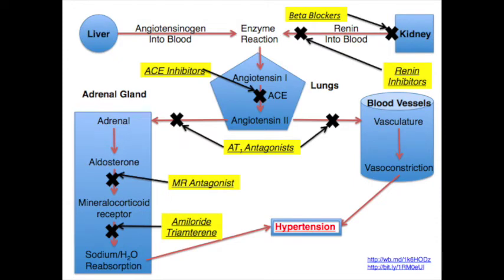Many different drugs have been identified for the renin-angiotensin-aldosterone system other than ACE inhibitors, such as beta blockers, which inhibit the kidney's ability to release renin. There are also renin inhibitors, which inhibit renin's ability to break down angiotensinogen to angiotensin-1. AT1 receptor antagonists block the active site of AT1 receptors, inhibiting angiotensin-2 binding. Mineralocorticoid receptor antagonists block the active site of mineralocorticoid receptors, preventing aldosterone binding. Another drug, amiloride/triamterene, blocks the epithelial sodium channel, which decreases sodium reabsorption. However, in this talk, we are focusing only on ACE inhibitors.